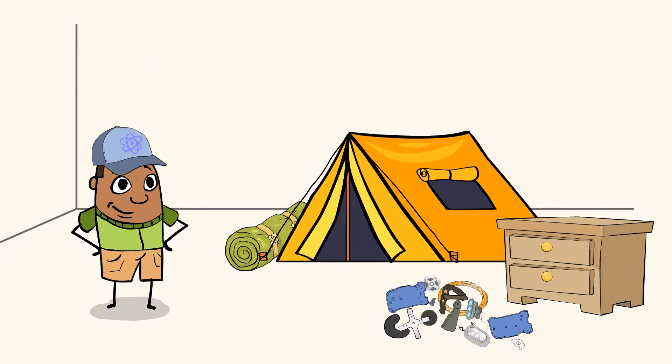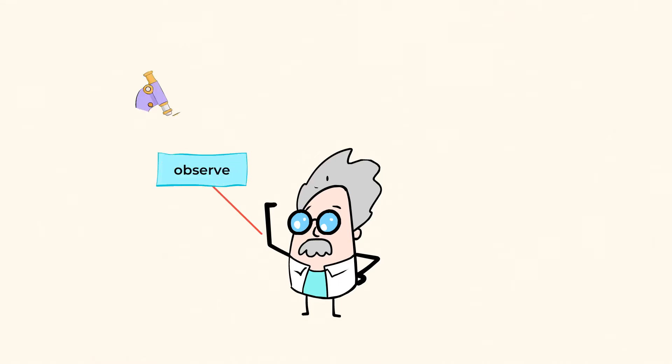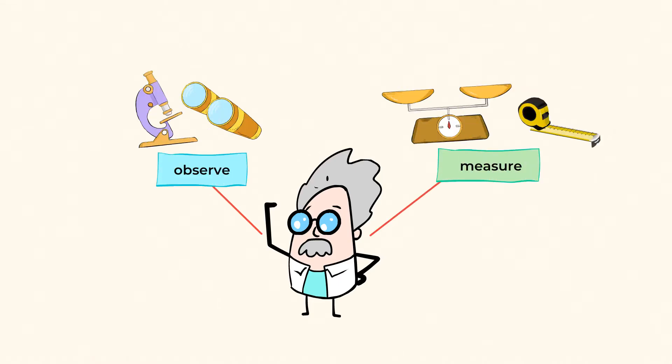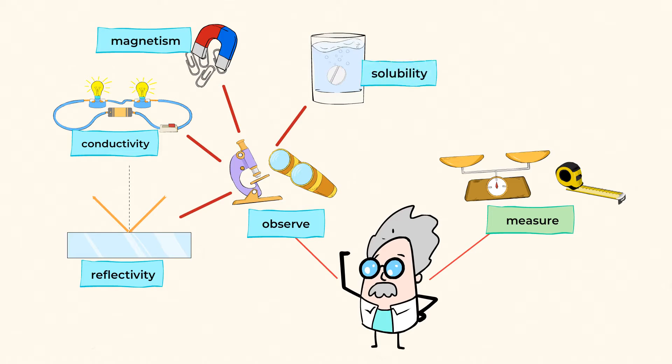Time to put on my science hat. Cool hat, huh? Scientists often observe and measure properties in order to identify what things are. They observe properties like reflectivity, conductivity, magnetism, and solubility.